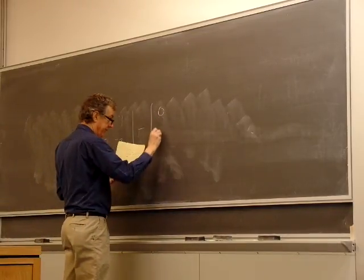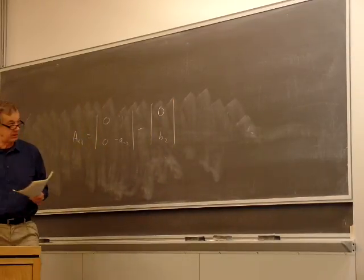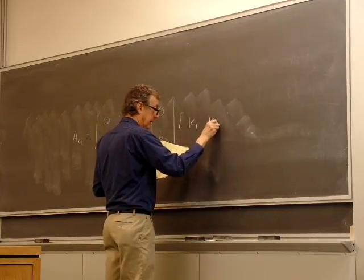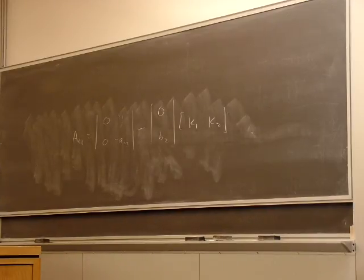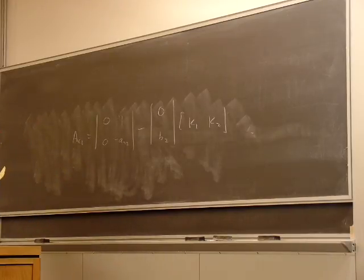A closed loop is your original A matrix, and I'm just going to call this A CL. Minus our B matrix, I'll just take this, coefficient B2 times K1, K2 for our two states.